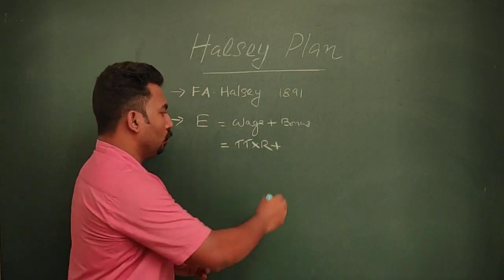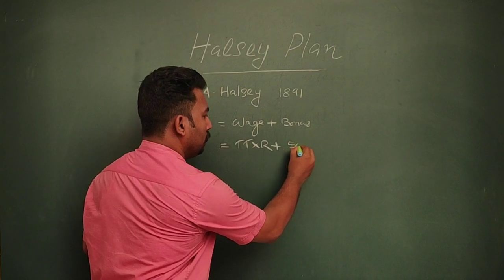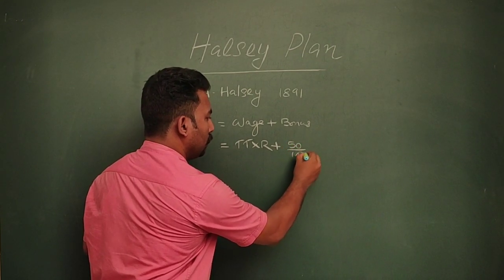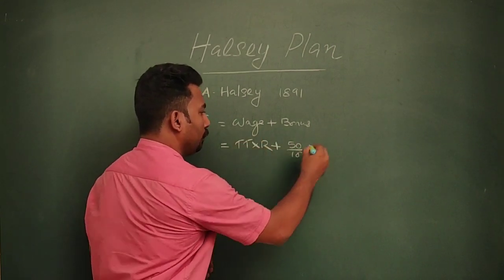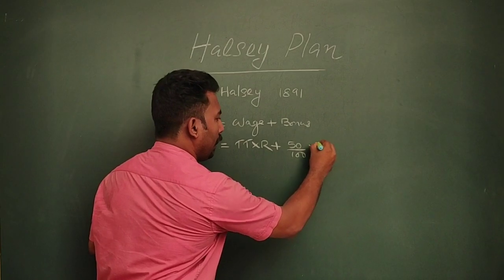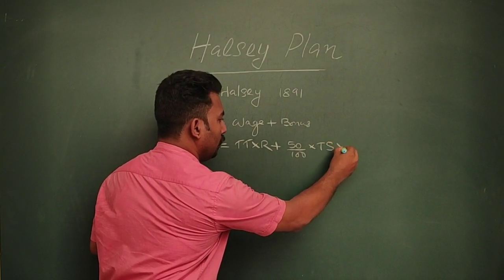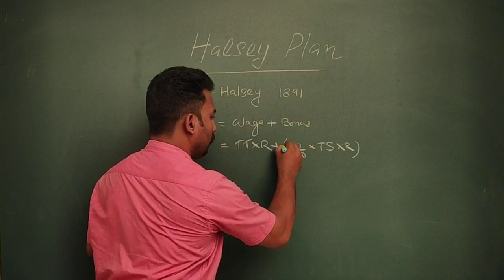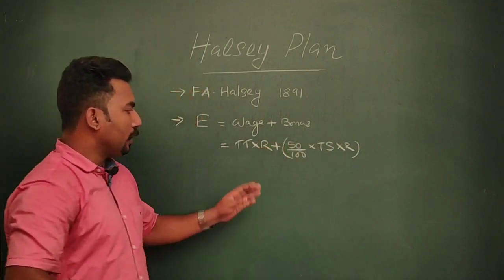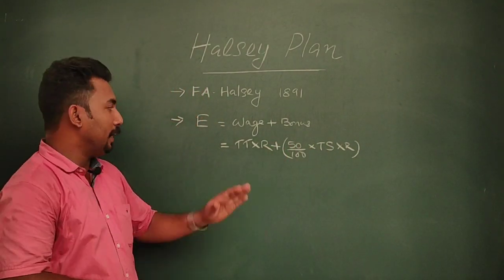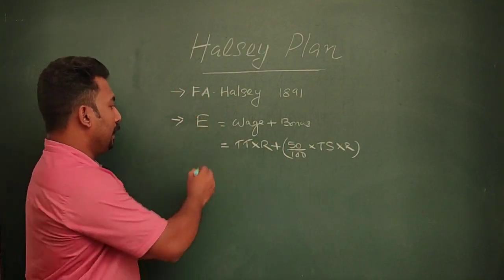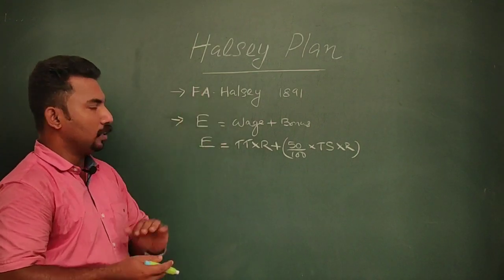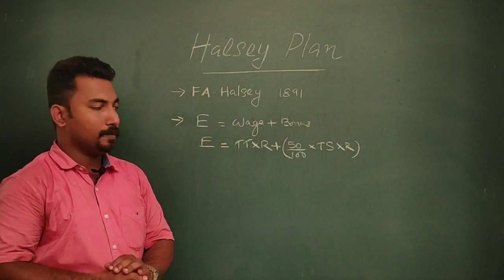The bonus component is equal to 50% multiplied by time saved multiplied by rate. So earnings as per the Halsey plan equal time taken into rate, plus 50% into time saved into rate.